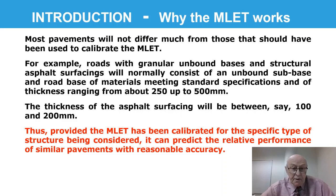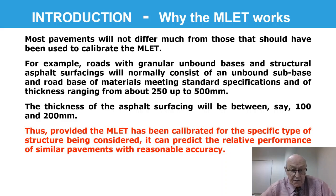Fortunately, most pavements will not differ very much from those that should have been used to calibrate the MLET. For example, roads with granular unbound bases and structural asphalt surfacings will normally consist of an unbound sub-base and a road base of materials that meet standard specifications, with thicknesses ranging from about 250 up to about 500 millimeters. The thickness of the asphalt surfacing will also be in a fairly narrow band, typically between 100 and 200 millimeters. Thus, provided the MLET has been calibrated for the specific type of structure being considered, it can predict the relative performance of similar pavements with reasonable accuracy.